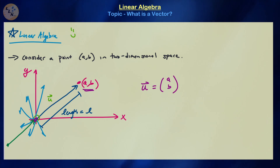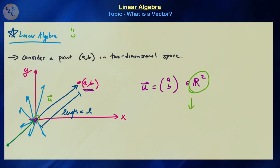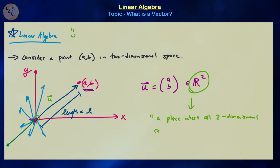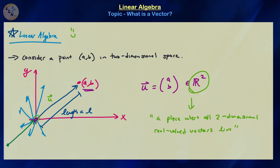We're going to be representing the location of where all these two-dimensional points are as R2. R2 is, informally, the place where all two-dimensional real-valued vectors live. Later we're going to be calling R2 a vector space or a two-dimensional vector space, but for now just think of R2 as the place where all two-dimensional real-valued vectors live.